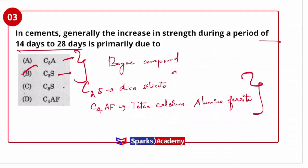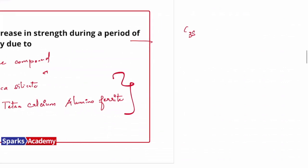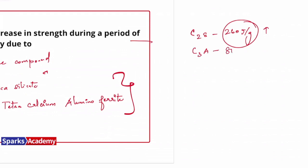Regarding heat of hydration: C2S has 260 J/g — very small, and it provides ultimate/long-term strength. C3A is for initial rapid setting, and its heat of hydration is very much higher compared to other components — C3A is 865 J/g. C3S is 500 J/g and C4AF is 420 J/g.